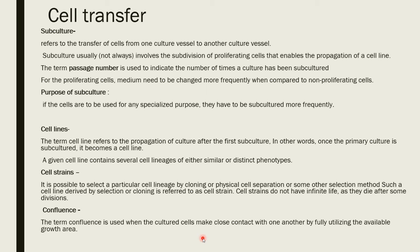The purpose of subculture: first, we need fresh medium and space. Confluence — a term we will discuss later — is used when cells have already consumed the substrate and the space. We need subculturing to overcome that condition. Another purpose is to get specialized cells for a specialized purpose. Through subculture we get cell lines, from cell lines we get cell lineages, from cell lineages we get the cell strain, from which we can grow a particular desired product.